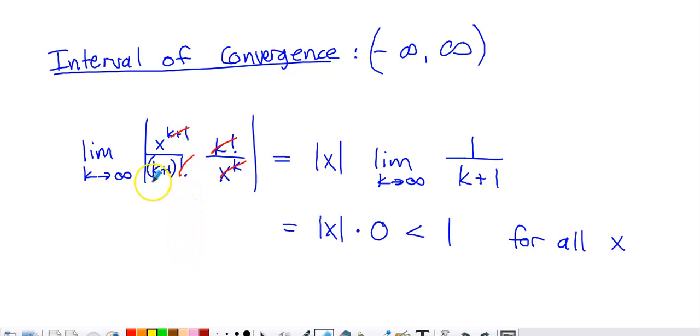The ratio test says check the limit as you approach infinity of the next term, so the k plus first term. From that rule from a few screens ago, I put k plus one in place of the k that was the exponent on the x, k plus one in place of the k that had the factorial applied to it within the denominator. Then I'm dividing by the kth term. I multiplied by the reciprocal. You see the factorial move to the top and then the x to the k term move to the denominator.